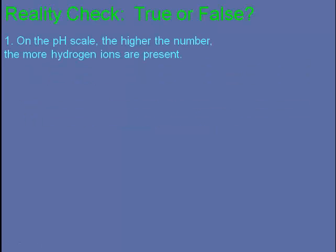Let's do a reality check. On the pH scale, the higher the number, the more hydrogen ions are present. This is false. On the pH scale, the higher the number, the less hydrogen ions are present relative to the number of hydroxide ions.